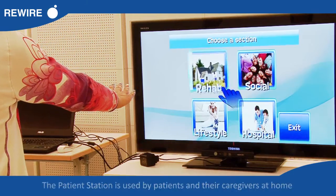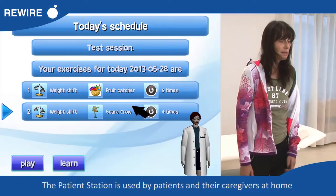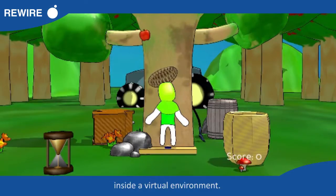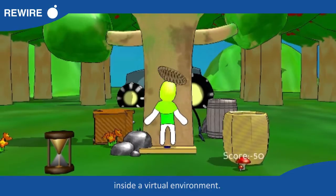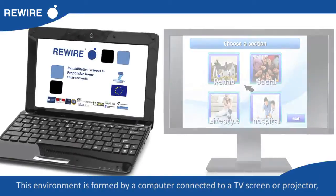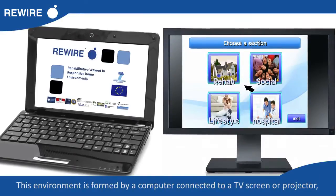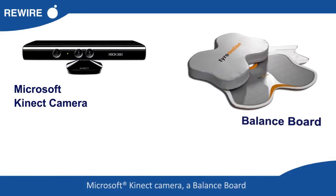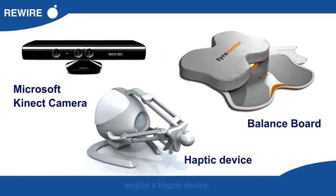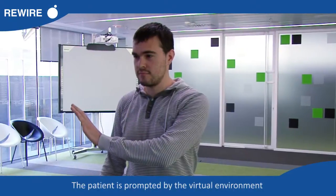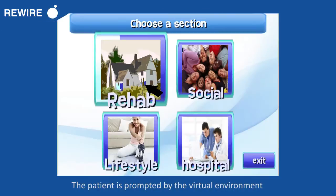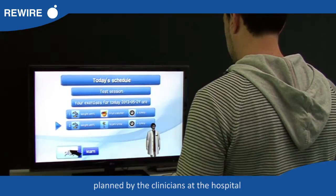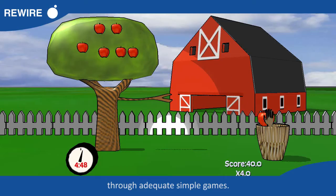The patient station is used by patients and their caregivers at home to perform supervised rehabilitative training inside a virtual environment. This environment is formed by a computer connected to a TV screen or projector, a Microsoft Kinect camera, a balance board, and/or a haptic device. The patient is prompted by the virtual environment to follow therapeutic exercises planned by clinicians at the hospital through adequate simple games.